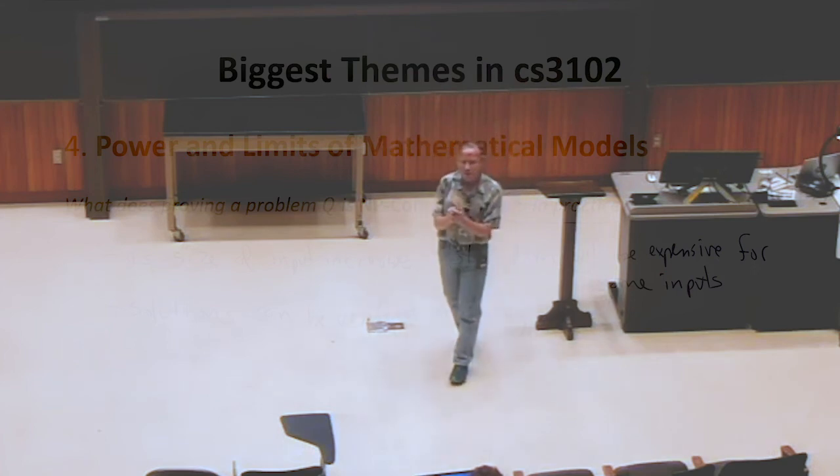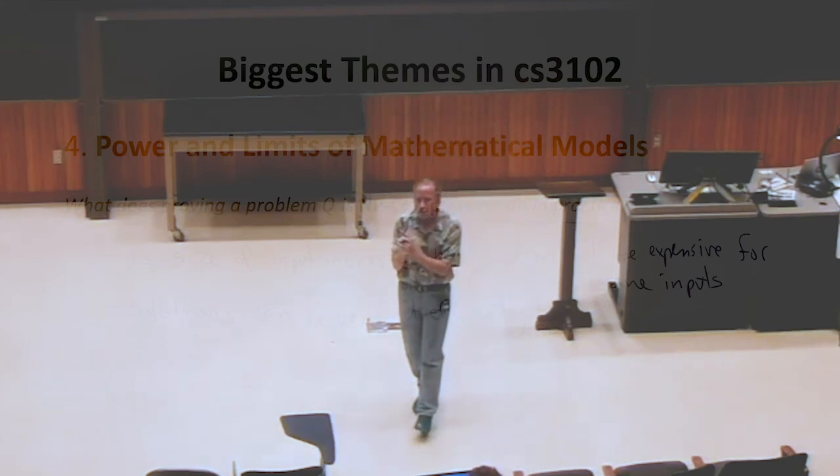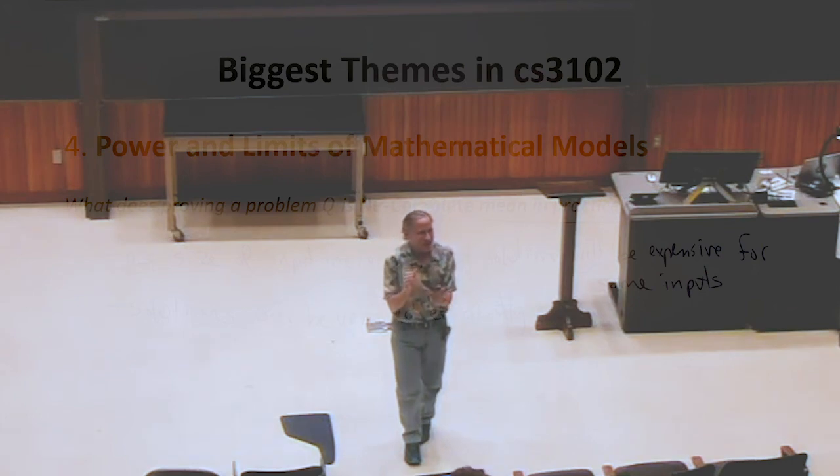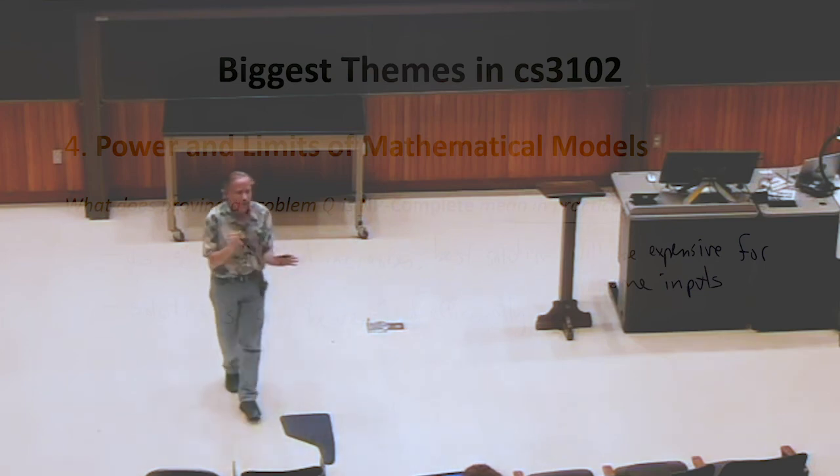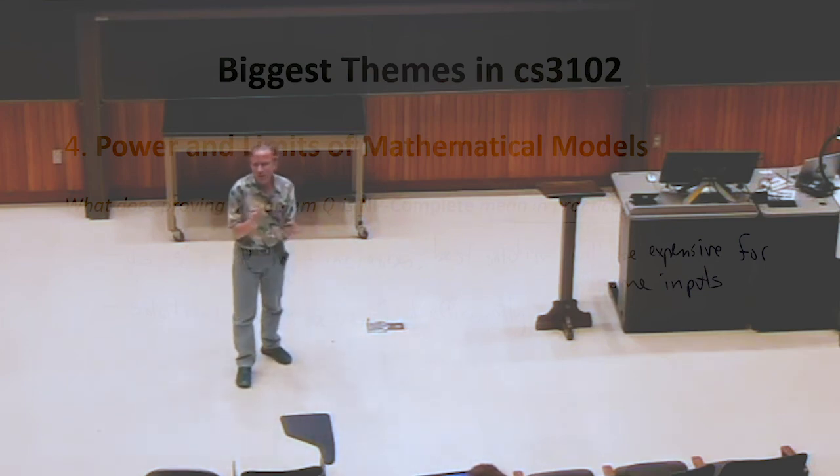And people have tried to build cryptosystems based on NP-complete problems, thinking this means it's hard. In order for it to be useful for cryptography, you have to know that the instance of the problem is actually a hard one. And if you pick a random instance of most NP-complete problems, at least depending on the problem and how you pick it, there's no guarantee that a random instance is hard.